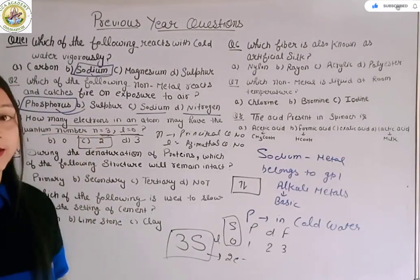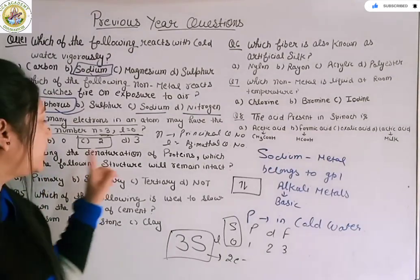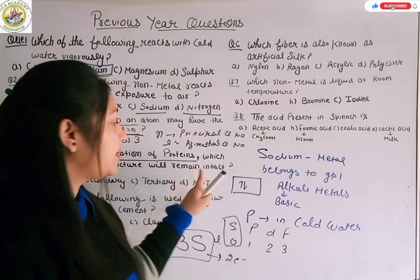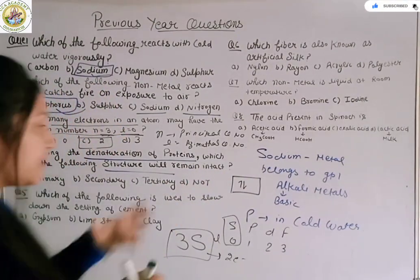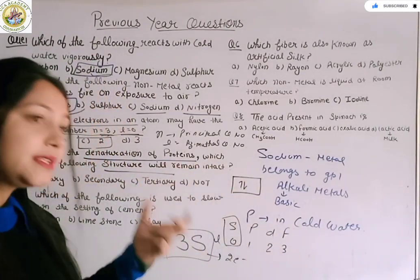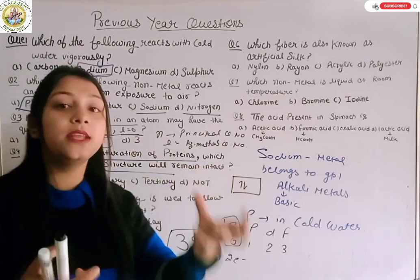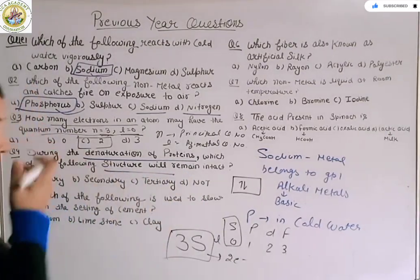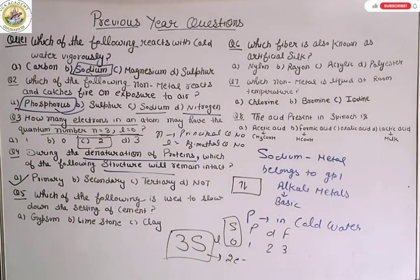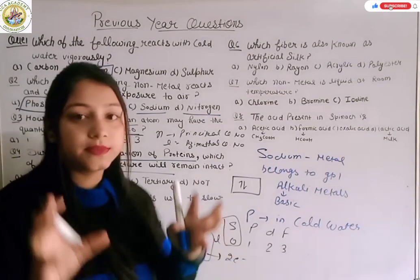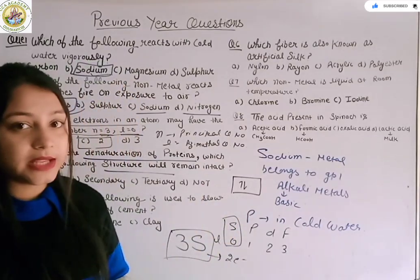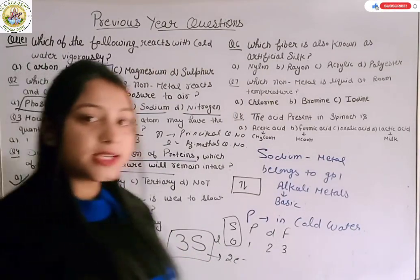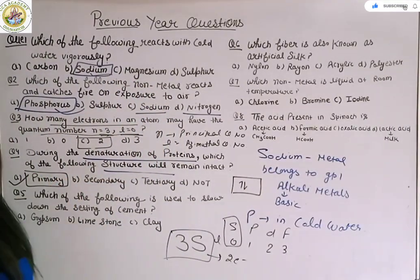The next question is during the denaturation of proteins, which of the following structure will remain intact? Intact means remains the same. Which structure remains? Here primary, secondary, tertiary and none of these. Primary is the right option because primary structure remains the same. But if we process, then what will happen? We break the structure in denaturation. So the primary structure will remain, so the right option is option A, primary. Clear?